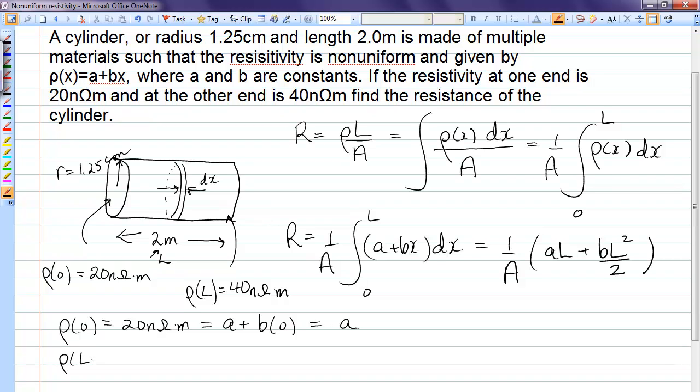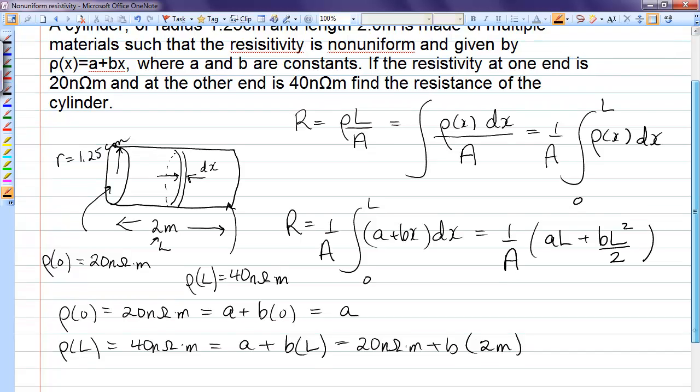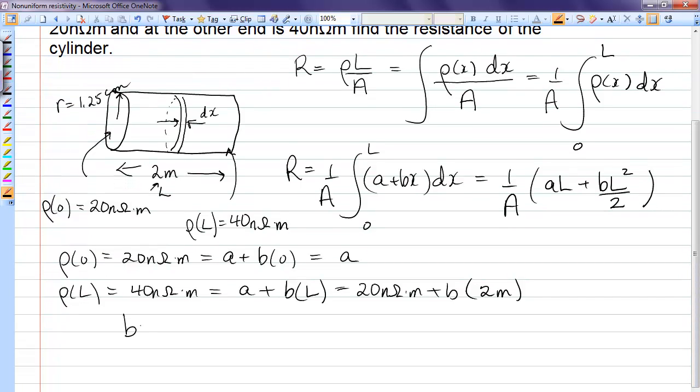ρ of L, sending in L into the formula, 40 nanohm meters must equal A plus B times L. And we already know A, so that's 20, plus B, and L is 2 meters. So this allows us to calculate B. B must be 40 minus 20 divided by 2, which is 10 nanohm.